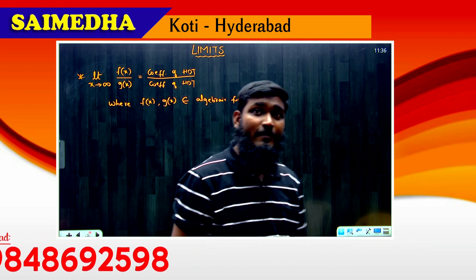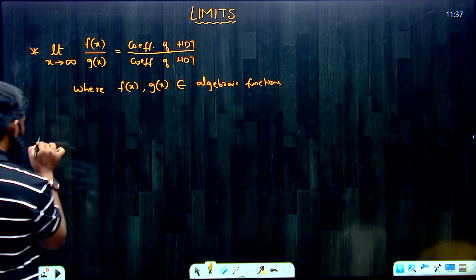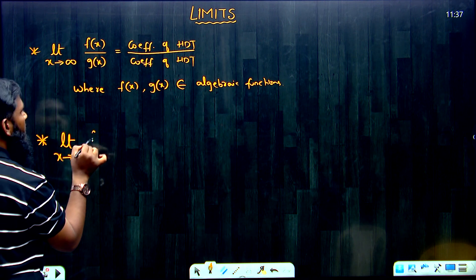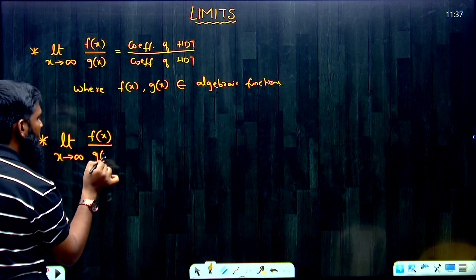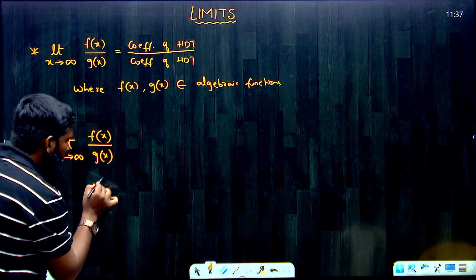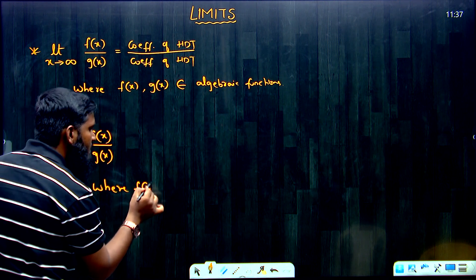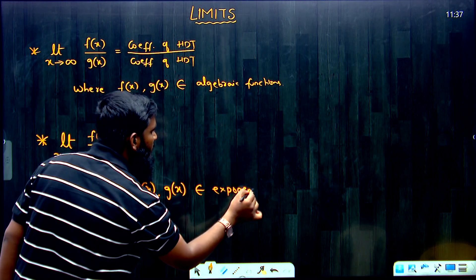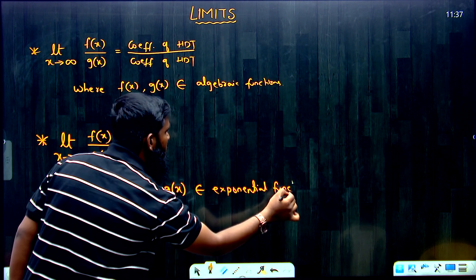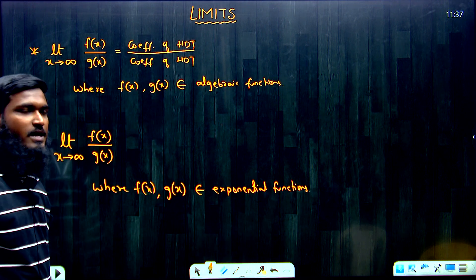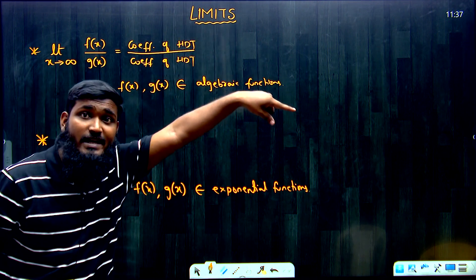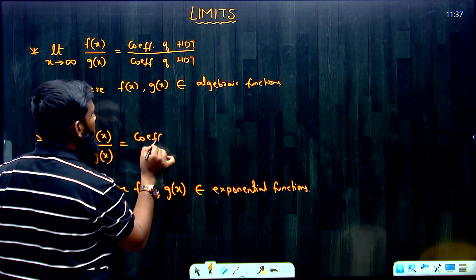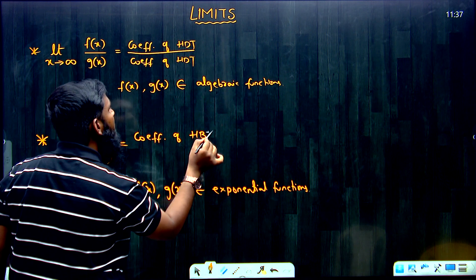Now, what is today's shortcut? If you are having limit x tends to infinity of f(x) divided by g(x), but here f(x) and g(x) belong to exponential functions. If you are having algebraic functions, we remember the highest degree term; if you are having exponential functions, then the same concept applies: coefficient of highest base term.